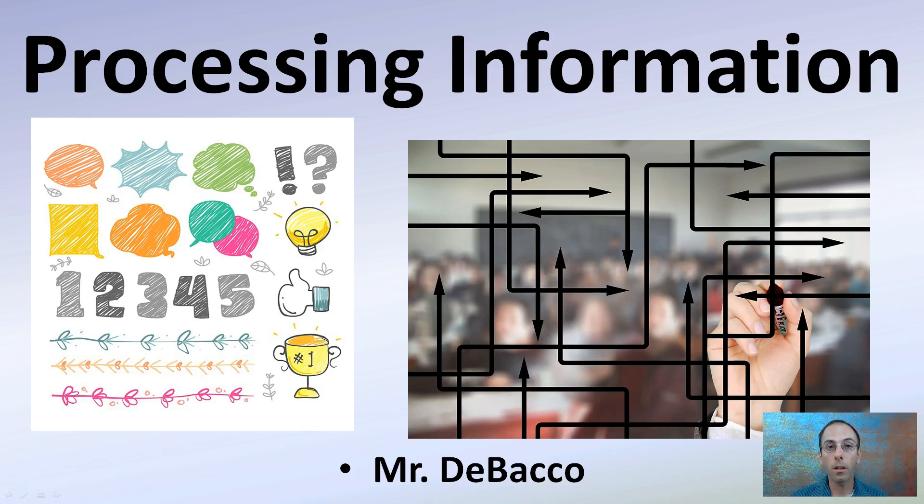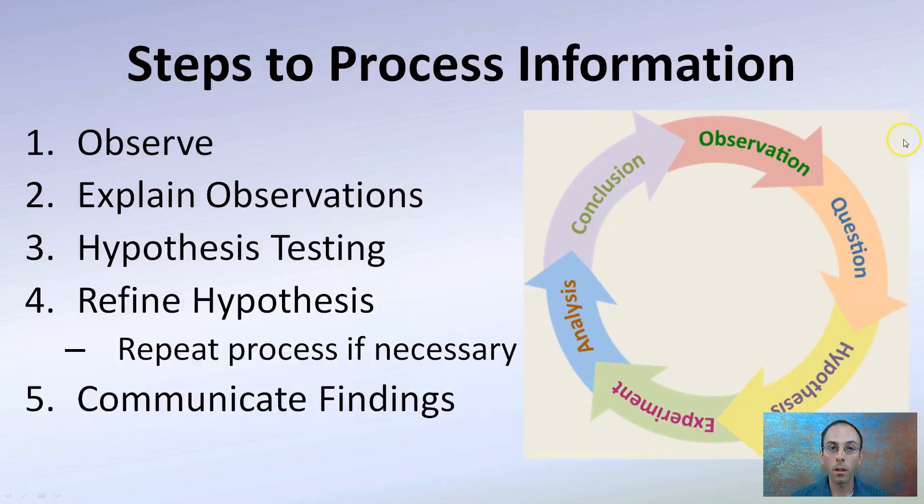Okay, here I'm going to go over the basic steps to process information in a scientific sense. So first part, there's kind of five major categories or steps to observe: explain those observations, hypothesis testing, refine hypothesis, repeat if necessary, and then communicate findings.